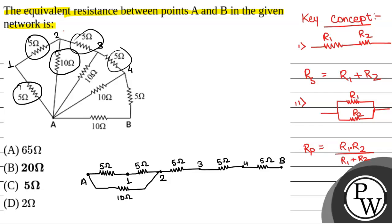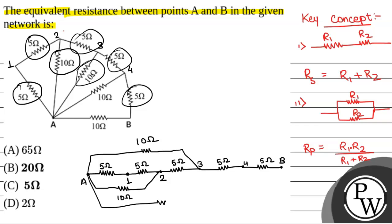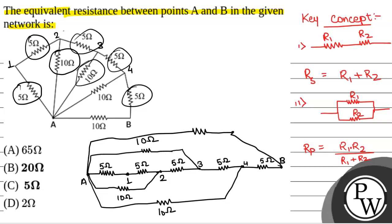These three resistors are now simplified. There is a resistor between A and 3, that is of 10 ohm. Again, there is a resistor between A and 4, that is again of 10 ohm. And there is a resistor between A and B, that is again of 10 ohm. This is the 10 ohm resistor between A and B.